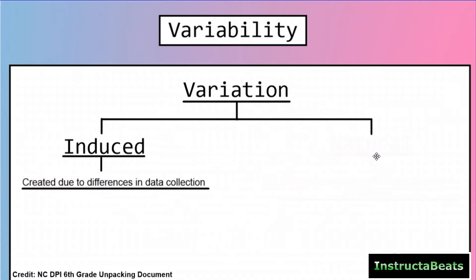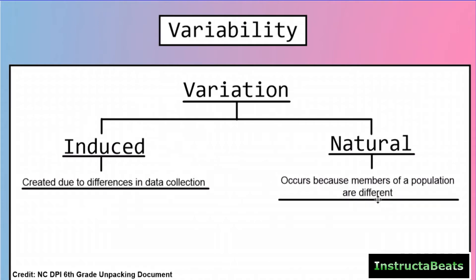The other type of variation is natural, and this is the one we're going to be dealing with in all of our lessons. Everything we're going to be doing deals with natural variation and not induced, but I want to make sure I introduce both. Natural variation occurs when members of a population are different. If you ask everybody what their favorite stuffed animal is, not everyone's the same — everybody's going to have a different answer. We call that natural variation. Obviously not everybody in a population is the same exact height, and the differences we would see in different people's answers we call natural variation. These are the two types of variation — the two different ways we're going to get differences in our answers and in the data we're collecting.